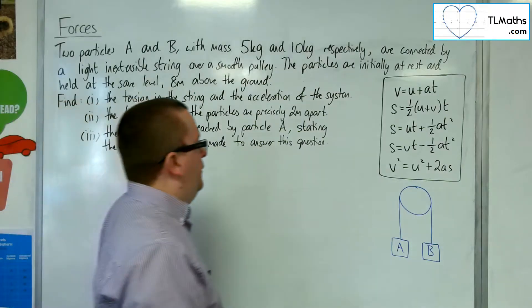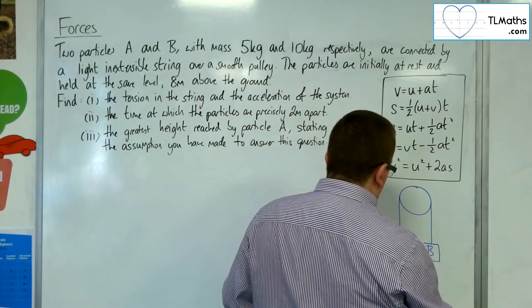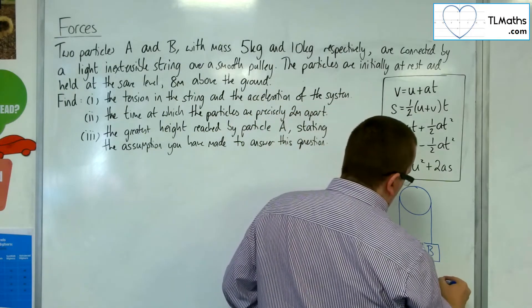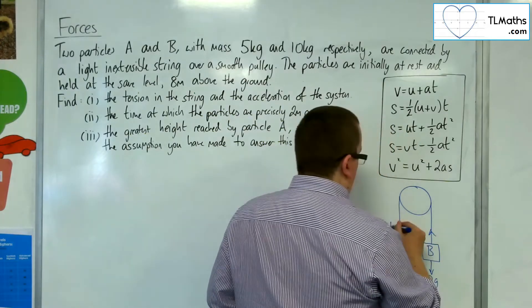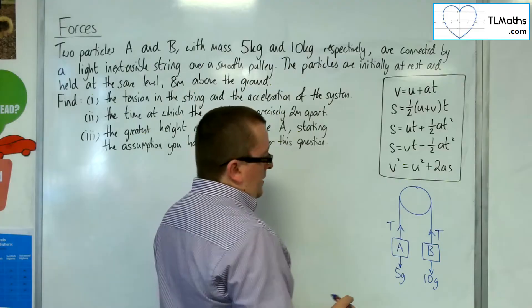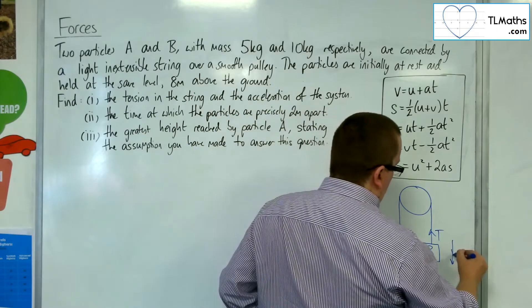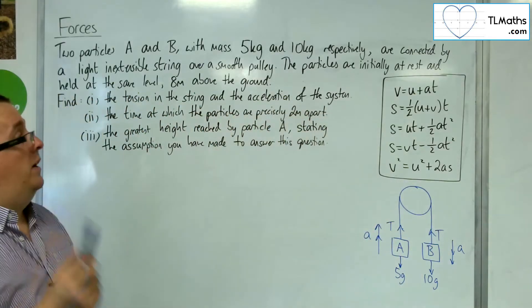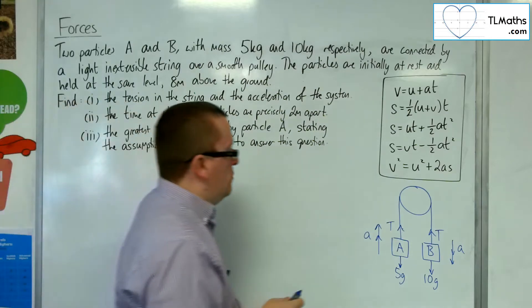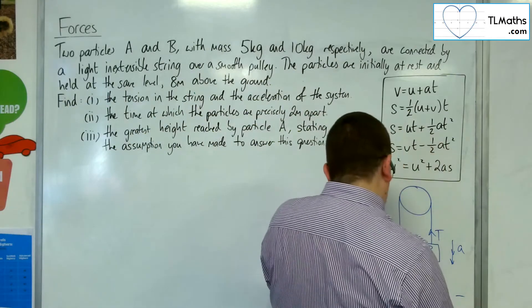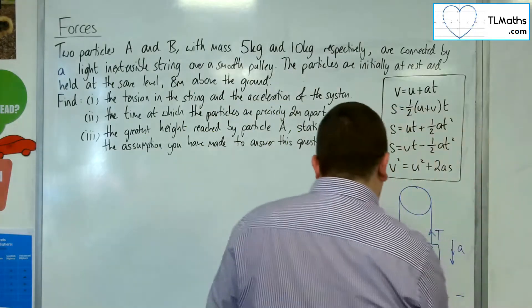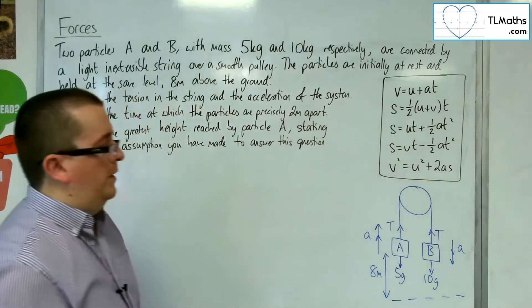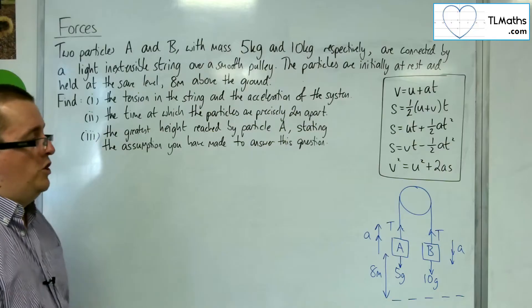Now, we know that particle A has mass 5 kilos, so it's got weight 5g. And B has weight 10g. There will be the tension in the string. And because this one is heavier, the acceleration we're going in that direction. Okay, and the particles are 8 metres above the ground. So, I'll draw that, there we are, just about 8 metres. Okay, so this is the situation that we have.